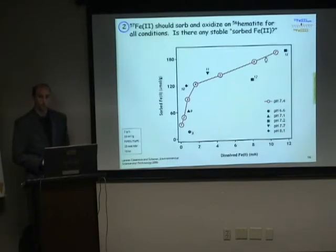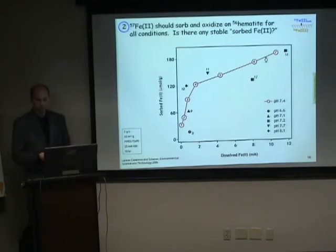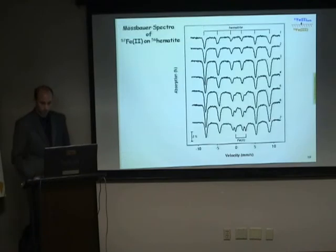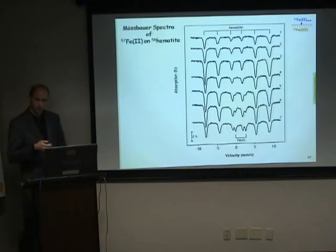I made an Fe2+ sorption isotherm by simply mixing 56 hematite and aqueous 57Fe2+. The points in red are the isotherm points at one constant pH of 7.2. All along this isotherm, we removed the solids, put them in the spectrometer, and got our patterns. For all points along the isotherm, we see six peaks indicative of hematite, meaning Fe2+ that sorbed on hematite got oxidized and assembled into the hematite structure.